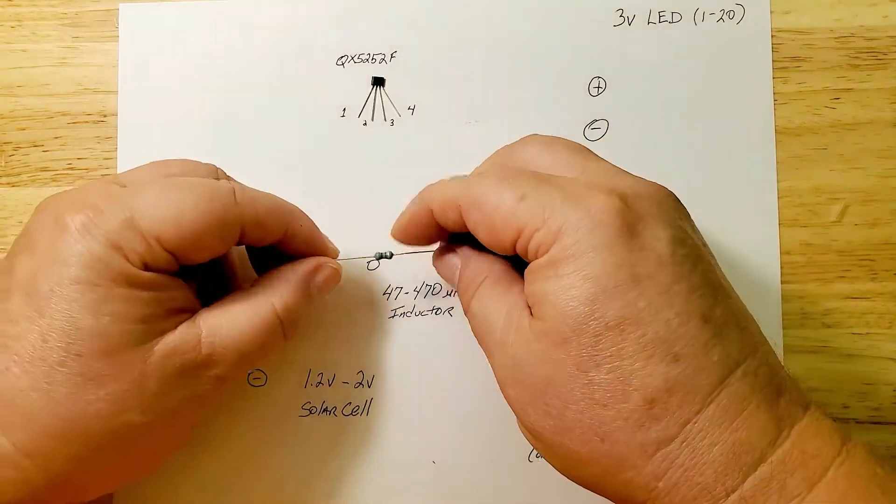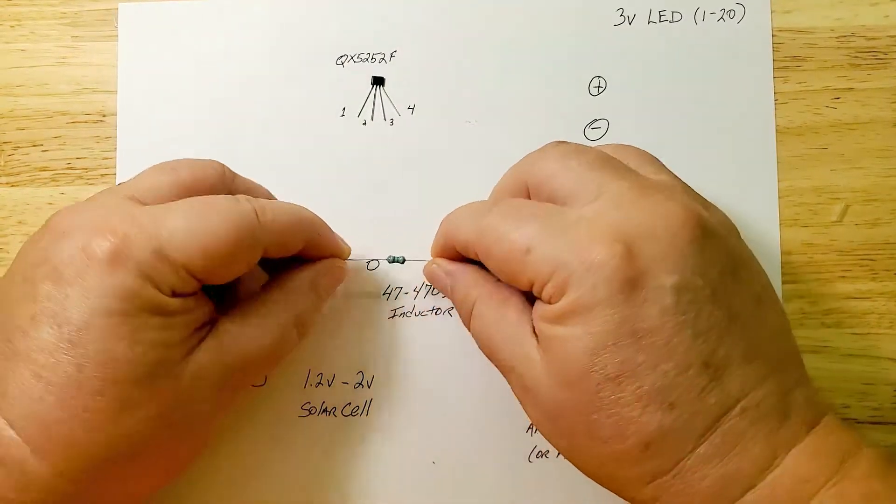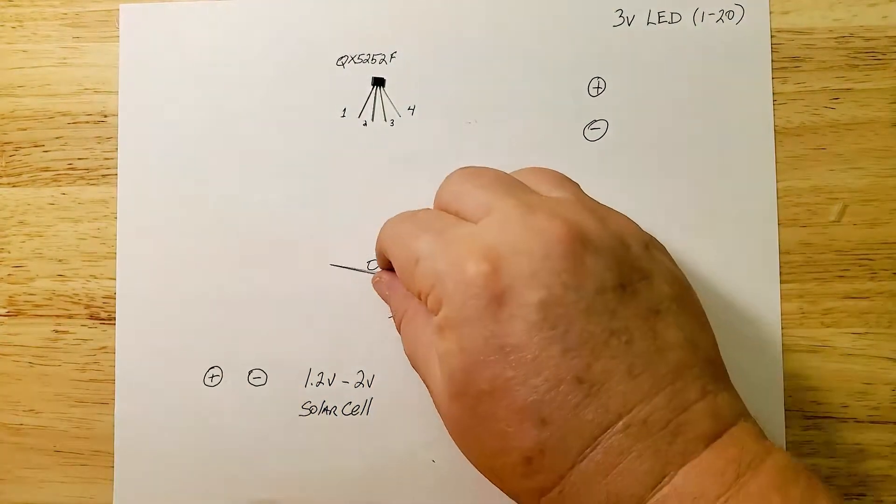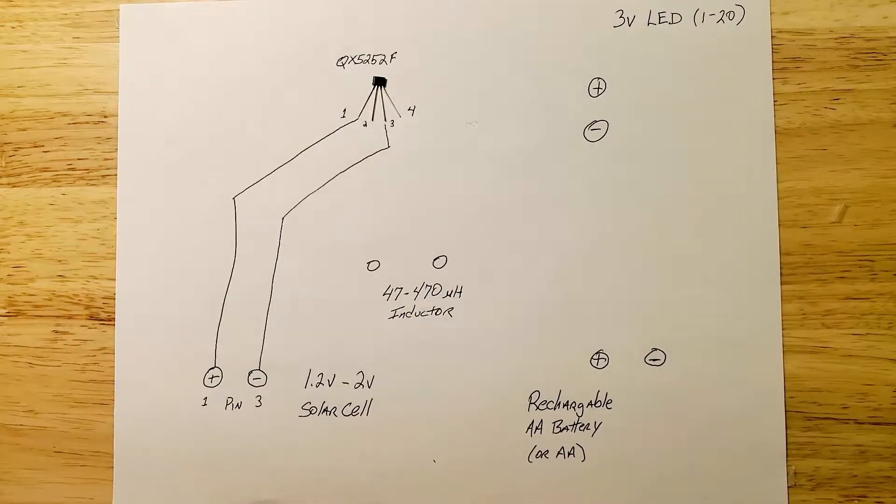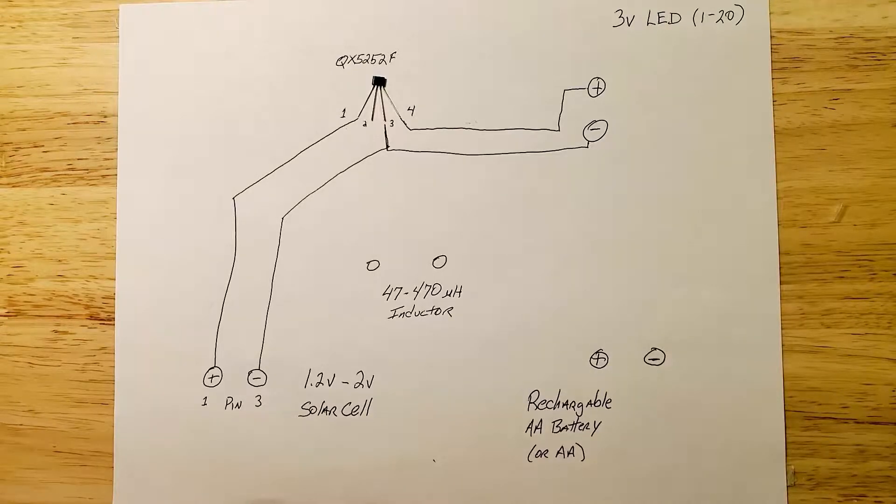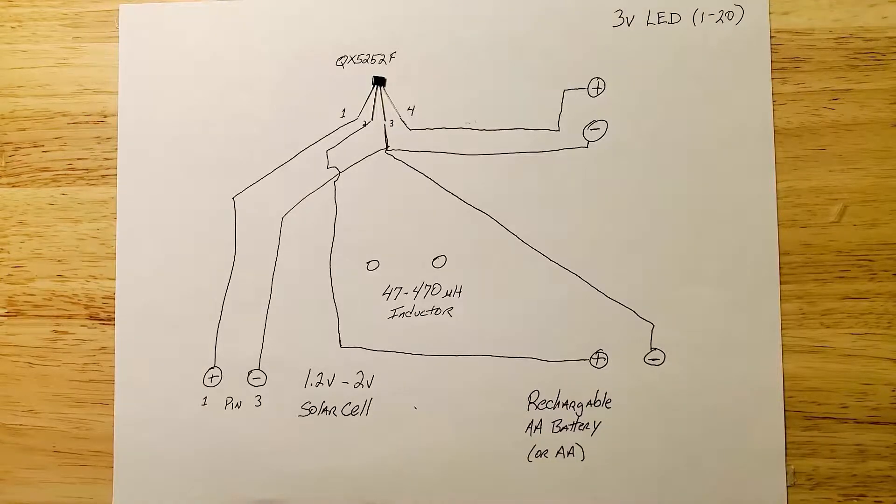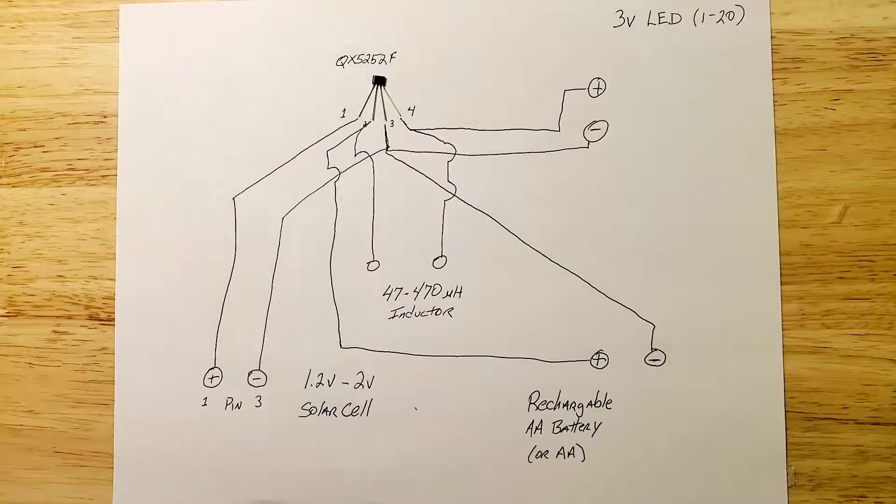Your inductor doesn't have a positive and negative side, so it will work either way. I flip it around just for good luck. Solar cell positive to pin 1, negative to pin 3. LED positive 4, negative pin 3. Battery positive, pin 2, negative 3. The inductor connects to pin 2 and pin 4.